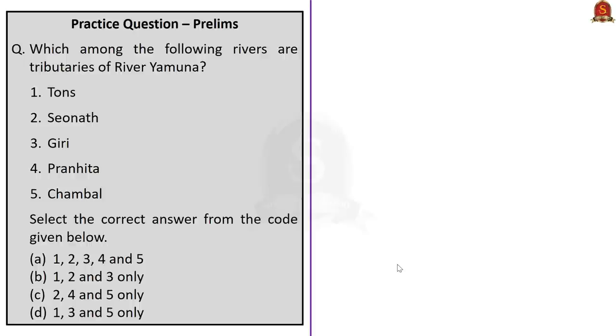Look at this practice question: which among the following rivers are tributaries of river Yamuna? Statement 1 Tons, Statement 2 Sheonath, Statement 3 Giri, Statement 4 Pranhita, Statement 5 Chambal. The tributaries of Yamuna include Rishi Ganga Kuntha, Hanuman Ganga, Tons, Giri, Chambal, Sindh, Betwa, Ken, Hindan, Rind, Sengar, and Varuna. Based on this, we can find that only options 1, 3 and 5 are right. Options 2 and 4 are incorrect because Sheonath is the longest tributary of Mahanadi and Pranhita is the largest tributary of Godavari. Since only the first, third and fifth options are right, the correct answer is option D, that is 1, 3 and 5 only.